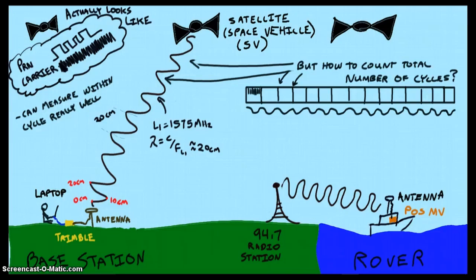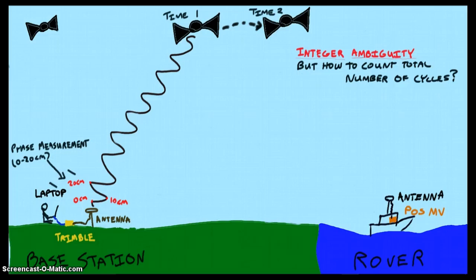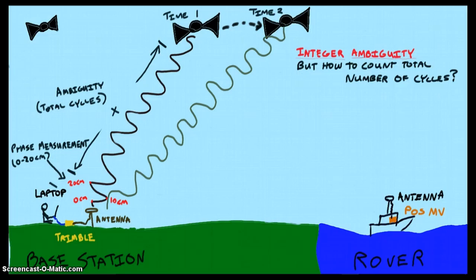Well, getting an exact integer count of how many cycles is enough of a problem that it has its own name, integer ambiguity resolution. The answer to this problem is math, something called double differencing, and, as with most things GPS, more satellites is more better.